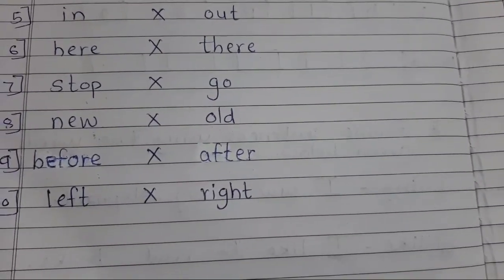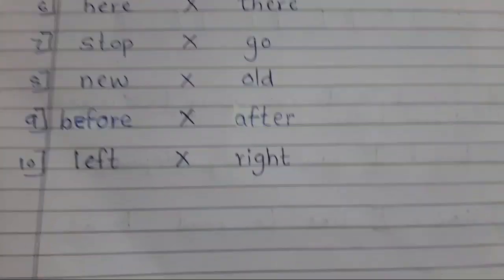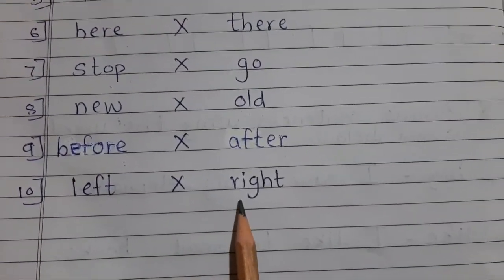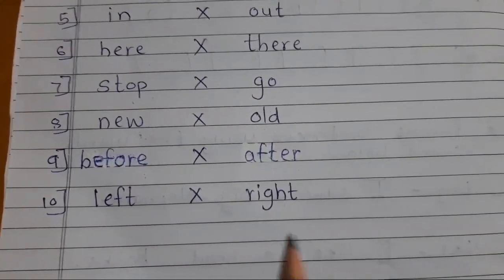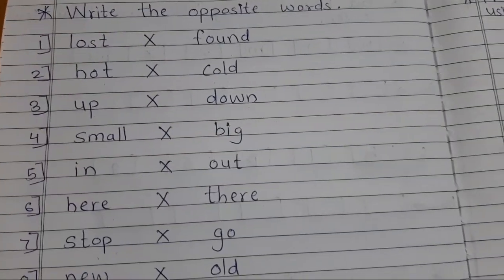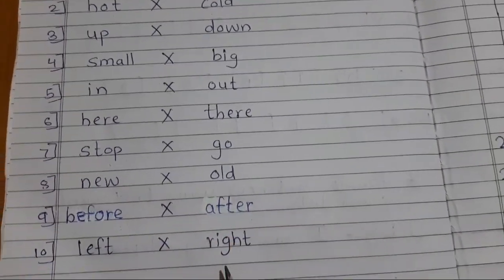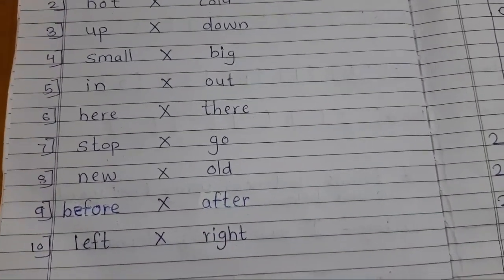Then number ten is left. Left. Opposite R-I-G-H-T right. Baya, daya. Left, right. So understand student like this way you have to write and remember.